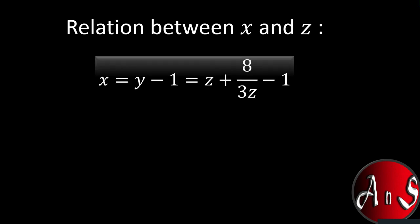Well, let's see the relation between x and z, because we are solving here for z but we actually need the value of x. So from the given substitutions we can find out that x is y minus 1, while y is z plus 8 upon 3z. So plugging in the values we get x is z plus 8 upon 3z minus 1.